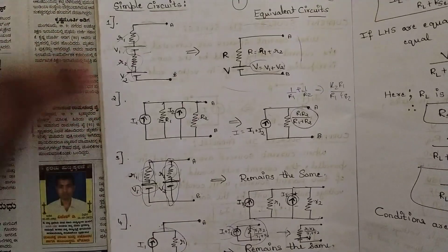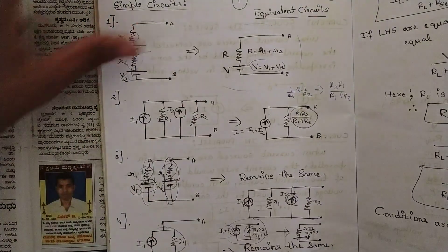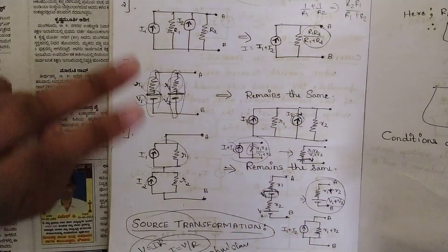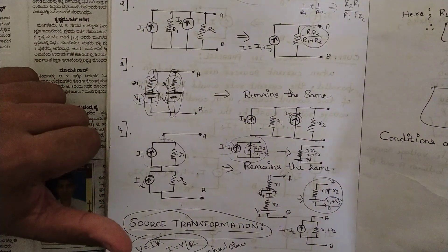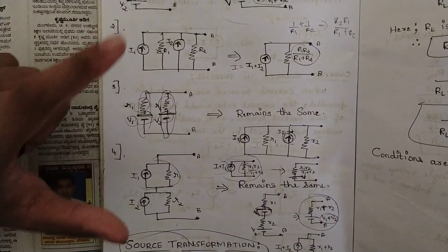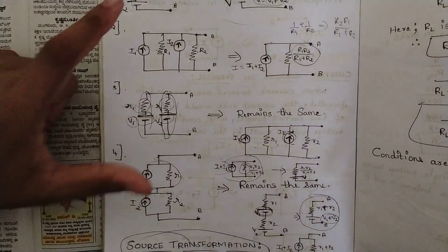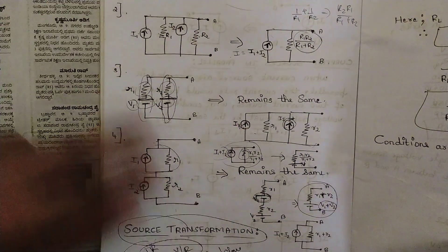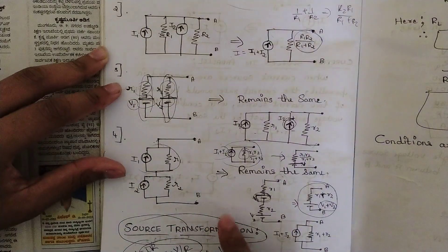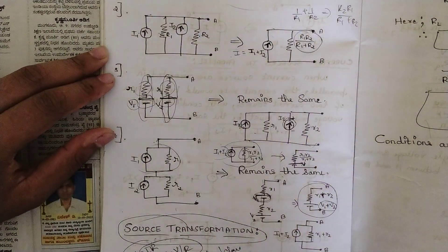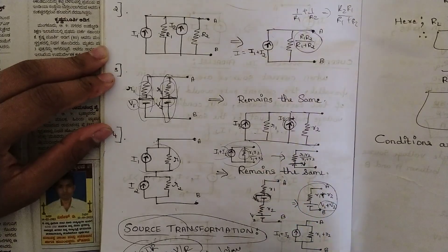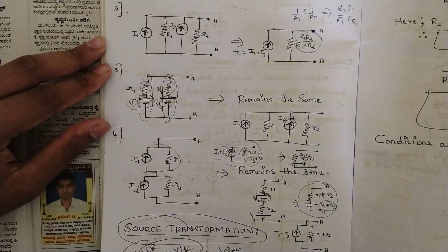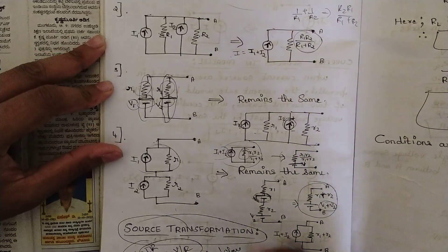So this was a brief description about circuits — the two key parameters to remember are voltage sources connected in series and current sources connected in parallel. This all comes under the topic called source transformation, covering the basic concepts. From the next session onwards we are going to solve problems related to source transformation.